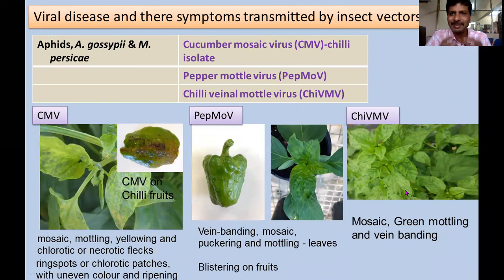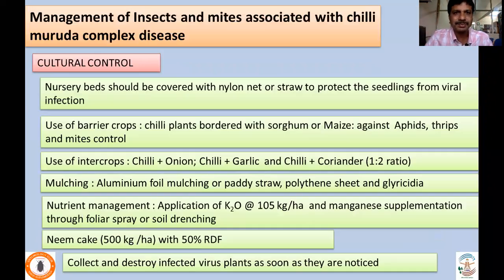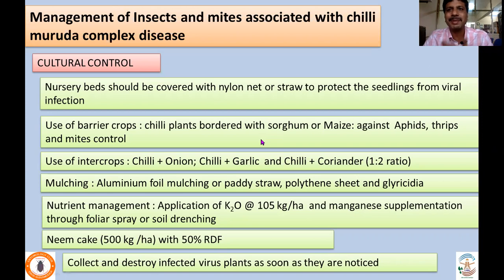When all these viruses infect a single plant, multiple infection occurs — the complex of symptoms expressed is known as Chili Murda complex disease, including upward curling, bunching of leaves, and severe yield loss. Both insect/mite feeding damage and multiple viral diseases must be managed together to achieve any yield. IPM strategies have therefore been developed.